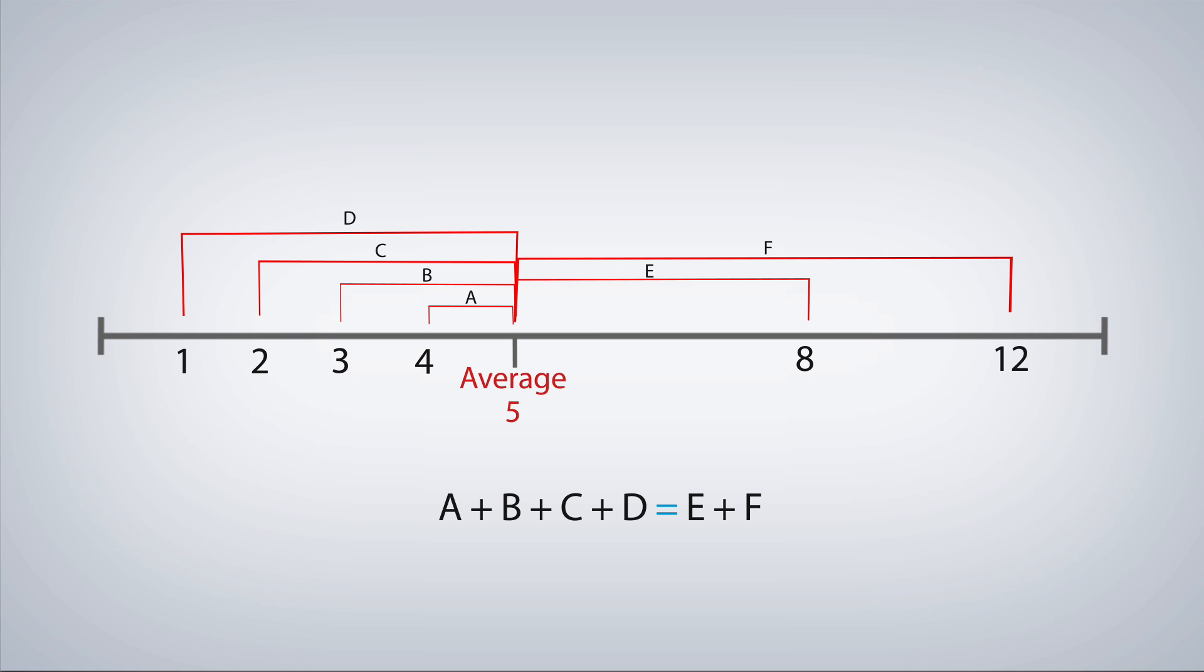At times, we can solve questions much faster by balancing both sides of the average. Here are two examples for using this tip.